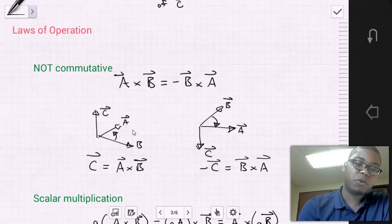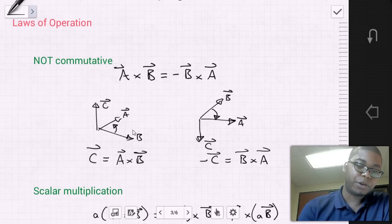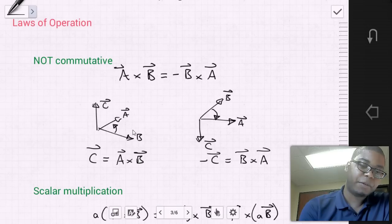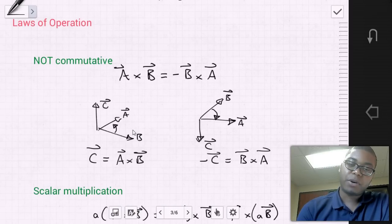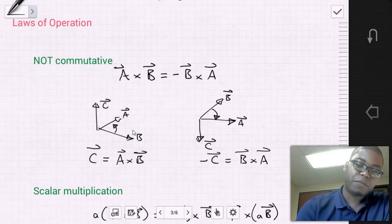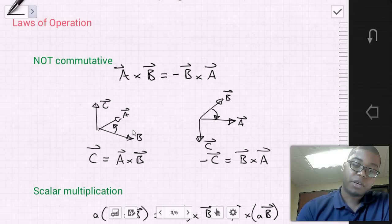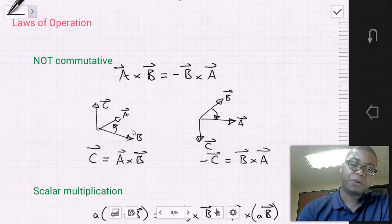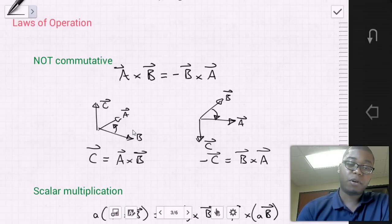The reason for this non-commutative property is the way the cross product is performed. If we do A cross B, we produce a positive C vector. However, if we do B cross A, it produces a negative C vector. This is important to consider because it can lead to inaccurate senses of direction for quantity C.